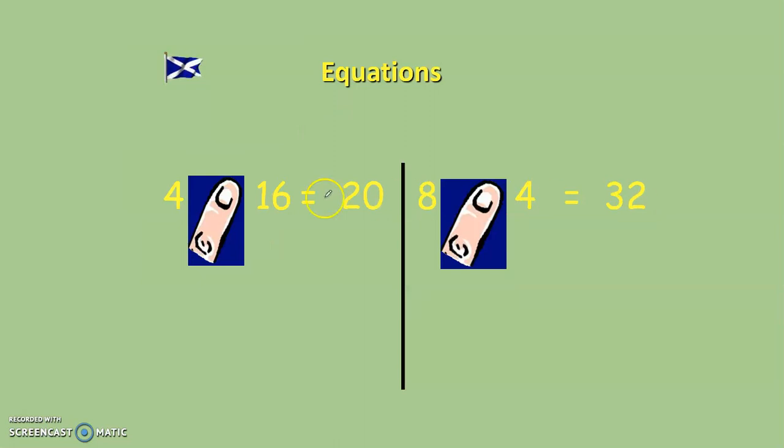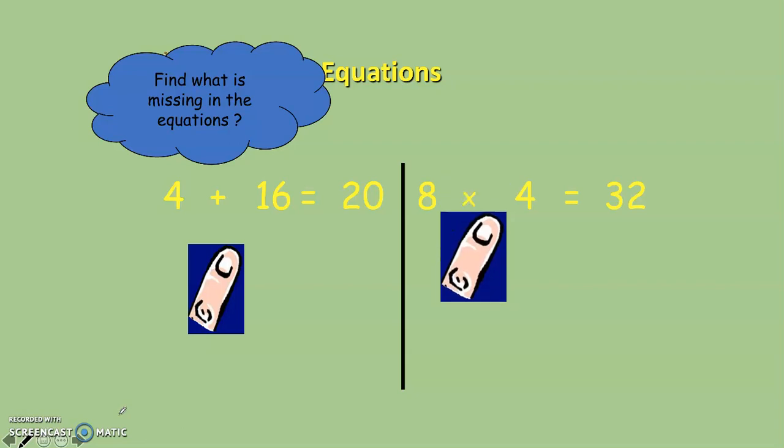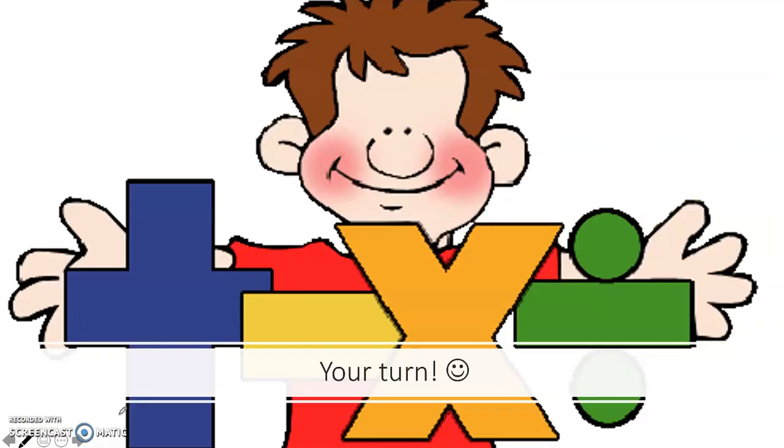Okay guys, work out the process that should be in for these two here. Pause the video for a couple of minutes and work out whether it should be add, subtract, times or divide. 4 and 16 to get to 20 and 8 and 4 to get to 32. Welcome back. So 4 and 16 to get to 20, what have I covered up? An add sign. 4 add 16 gives 20. Next one, 8 and 4 to get to 32. I've covered up a multiplying sign. 8 times 4 makes 32.